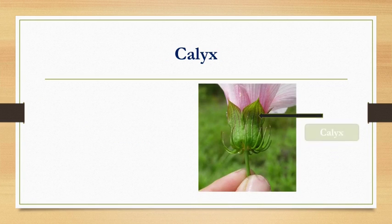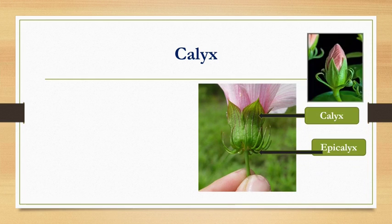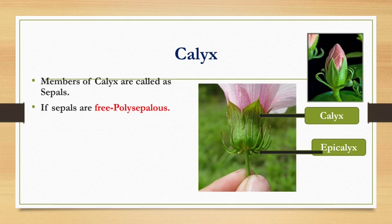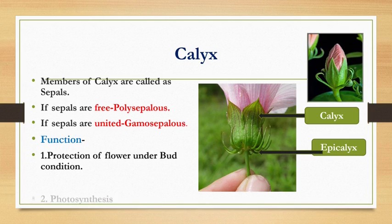Calyx is the protective whorl. It is green in color. Members of the calyx are called sepals. If sepals are free, the condition is called polysepalous. If sepals are united, it is called gamosepalous. The function of calyx is protection of the flower in bud condition, and it also helps in carrying out photosynthesis.